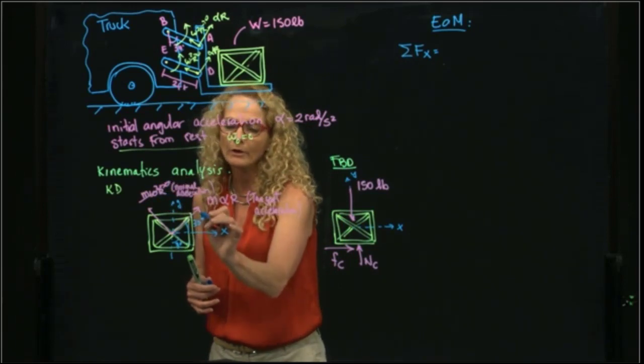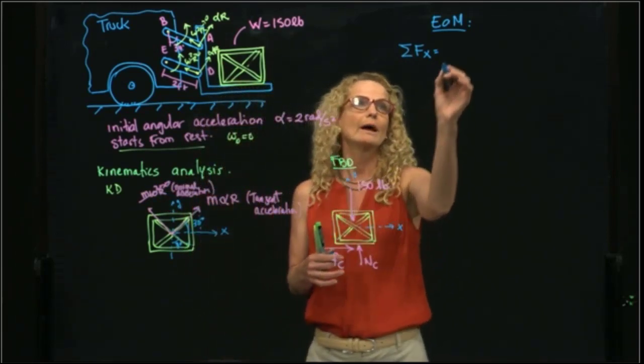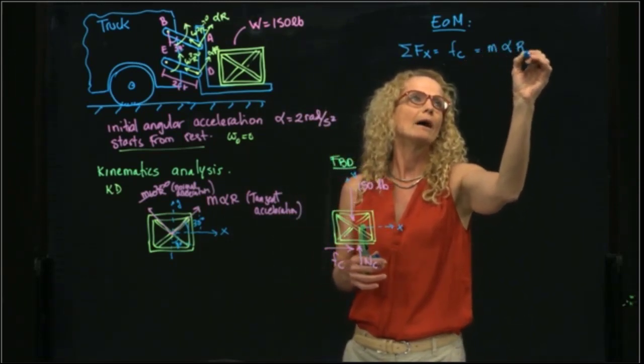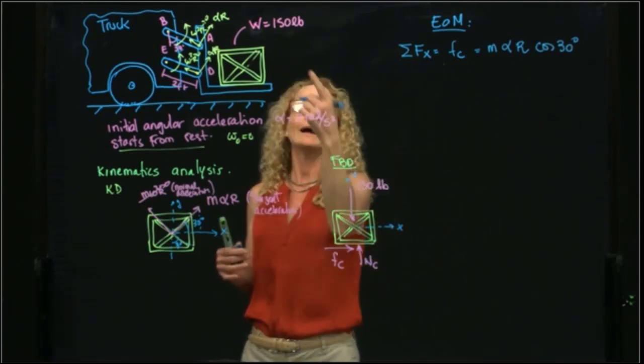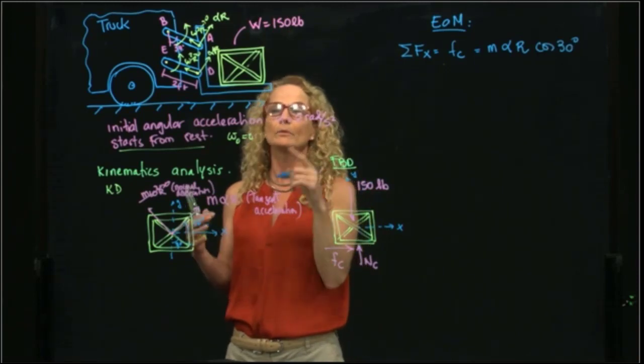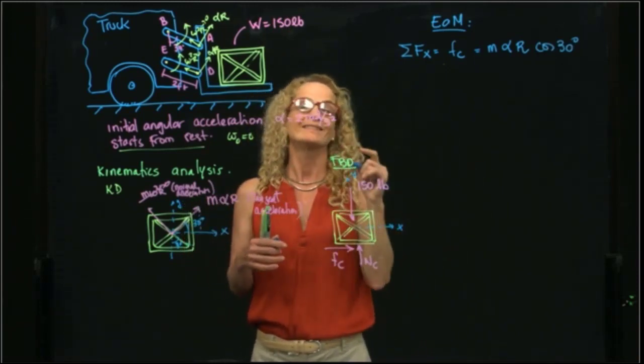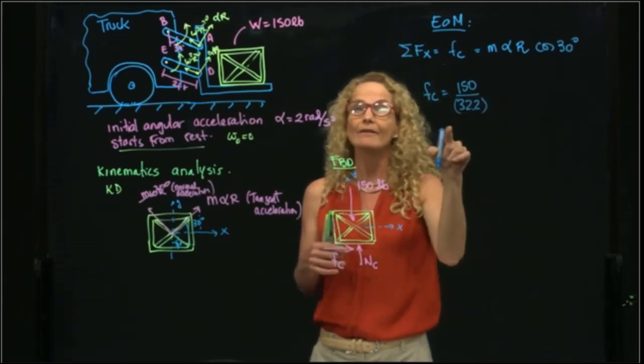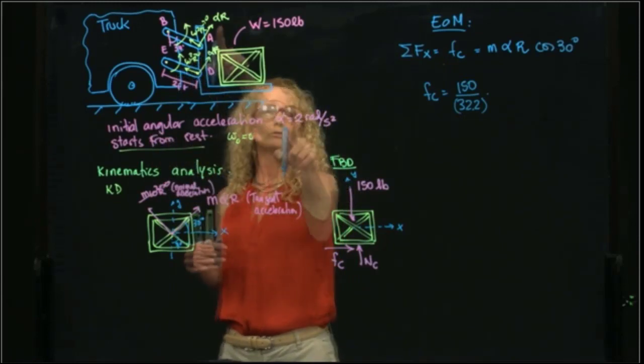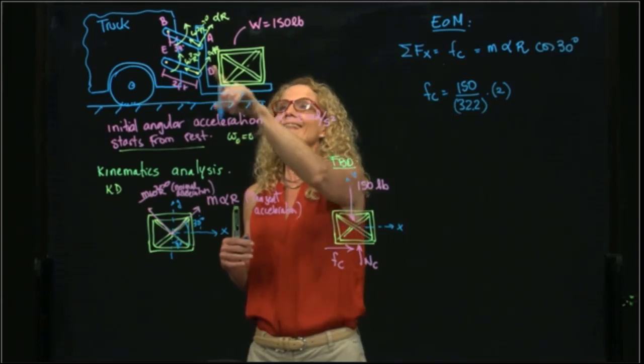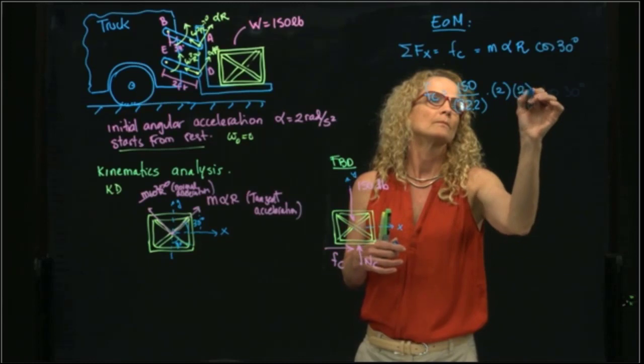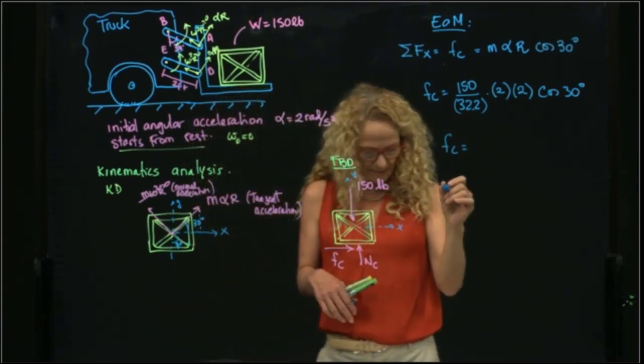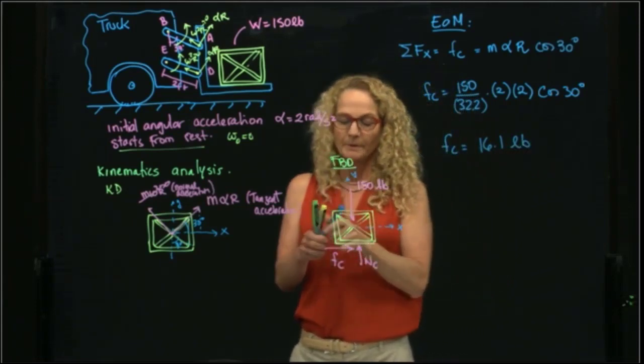So, what do we have in x? This one is equal to 0, and this one has a component. And in this case, I only have fc, because the other ones are in y, and then I have equals to mass alpha r cosine of 30. And if we substitute, we already have the mass because we have the weight. Remember that when we use U.S. customary units, our mass is our derivative unit. Therefore, fc will be equal to the mass, which is 150 divided by 32.2, which is the gravity, times alpha, which is given, which is 2 radians over second squared, times this radius over here that is also given, which is 2. And we have that, we can just multiply that, and we have the friction force. The friction force, in this case, is 16.1 pounds. And this is our first result.